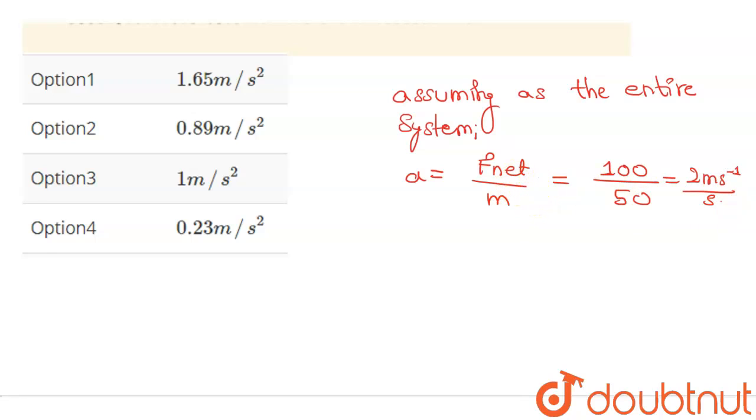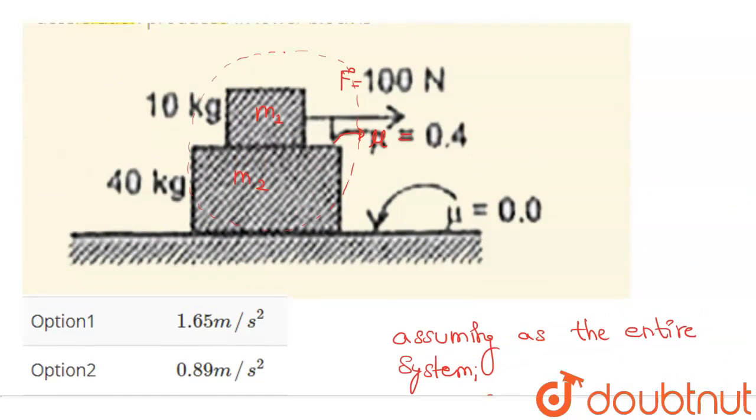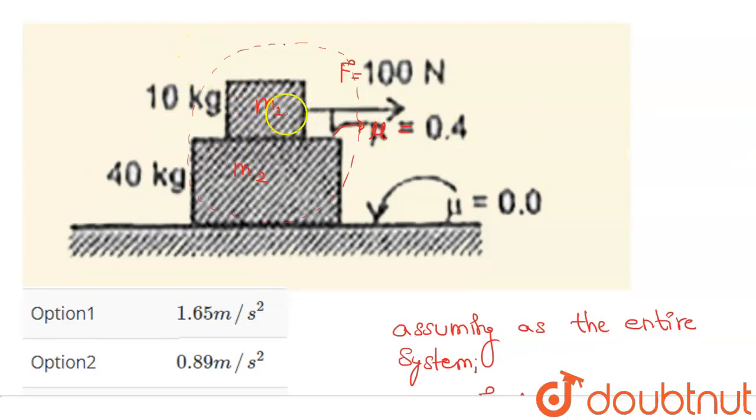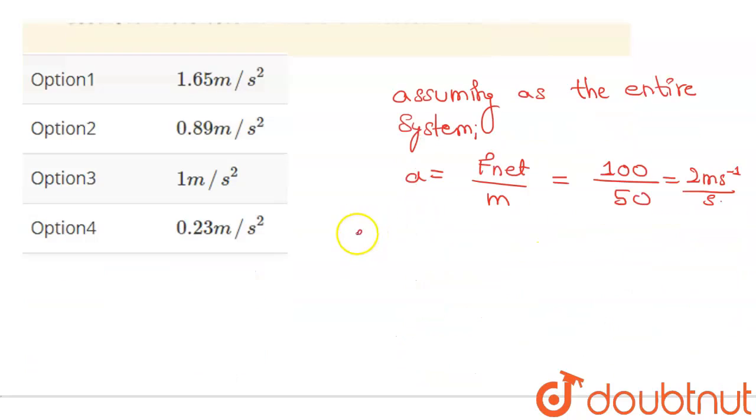Now we have been given friction. Since the force is applied in this direction, the friction will be in this direction. So our friction will be mu into 10.